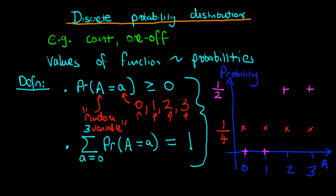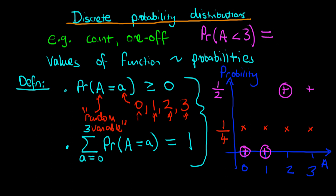Given that we have this probability distribution, how can we use it? Consider the second example: let's calculate the probability that the number of apples in our bag is less than three. All we do is add together the probability of there being zero, one, or two apples. Since the first two are zero and the probability of two apples is one half, the probability that the number of apples is less than three is just equal to one half in this case.